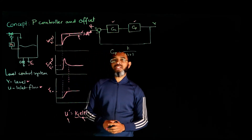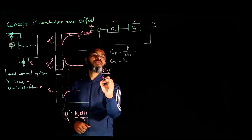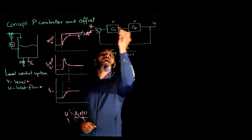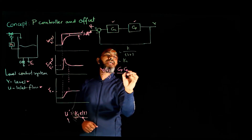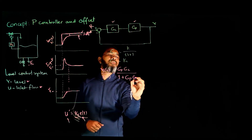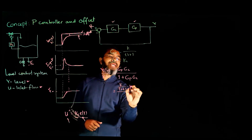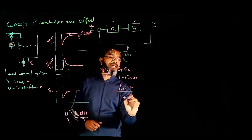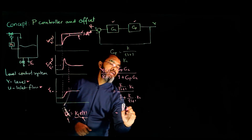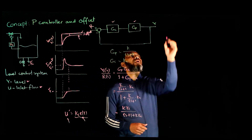Looking at the block diagram analysis, to find the relation between the output Y and the set point R, the closed-loop transfer function has all transfer functions between Y and R in the numerator — that is Gp times Gc — and 1 plus all the transfer functions in the loop in the denominator. Plugging in the values gives K over (tau·s + 1) times Kc, divided by 1 plus K over (tau·s + 1) times Kc.